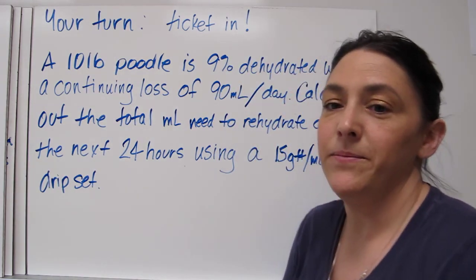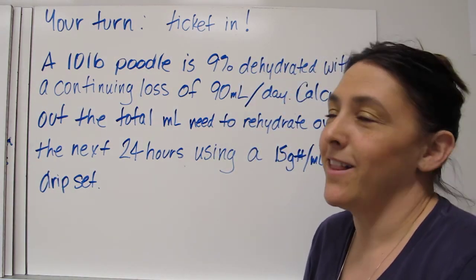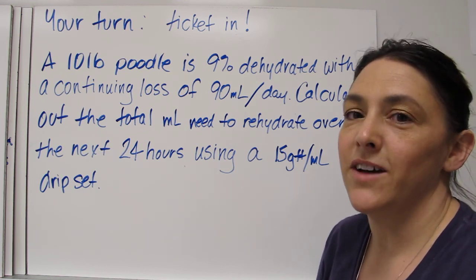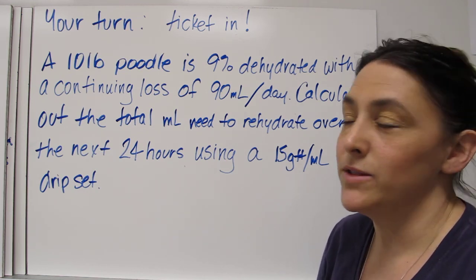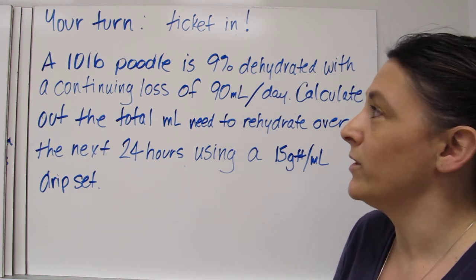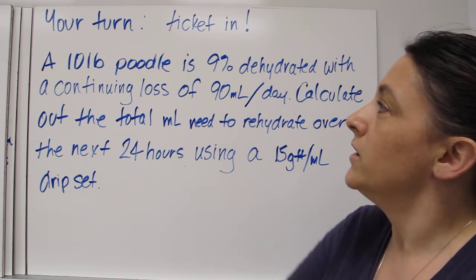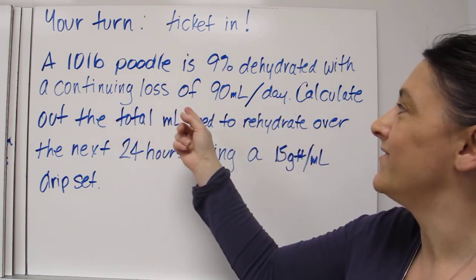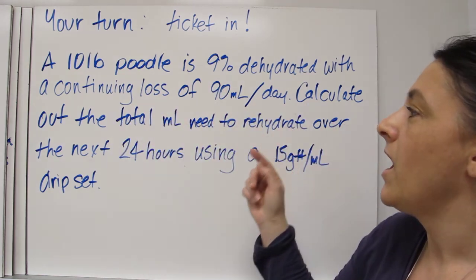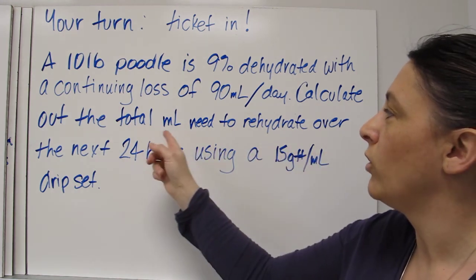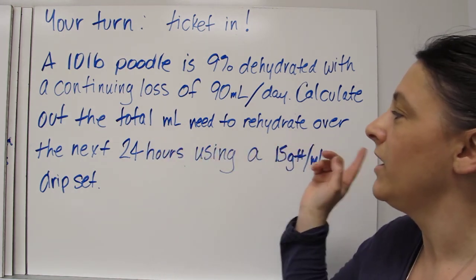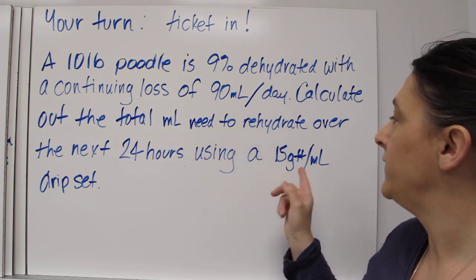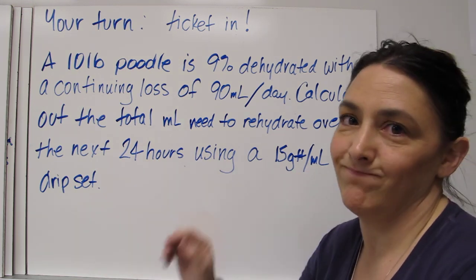And our final one for today, this is your ticket into class. Your ticket into class is to calculate out the fluid deficit and replacement amounts over the next 24 hours for our 10 pound poodle. So a 10 pound poodle is 9% dehydrated and he has a continuing loss of 90 mL per day. I want you to calculate out that total mL needed to rehydrate it over the next 24 hours. And I'd like you to use it with a 15 drop mL set. Thank you.